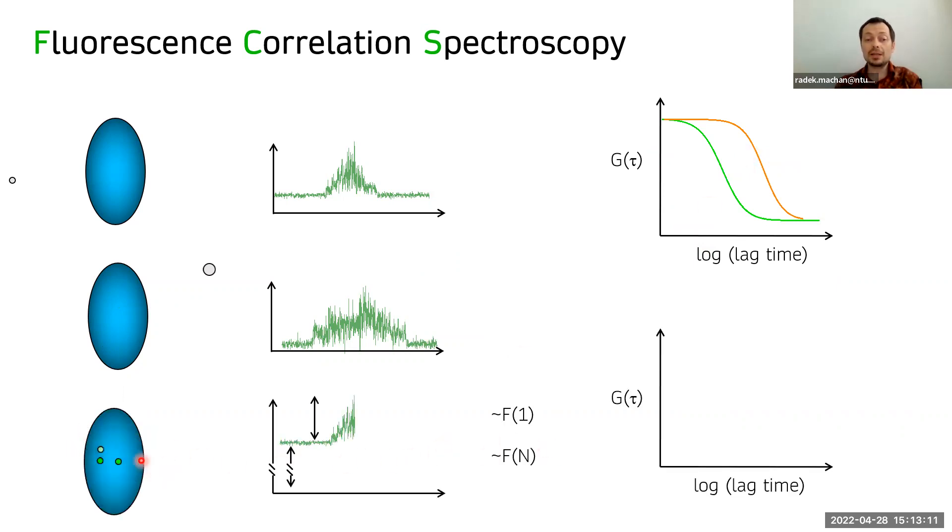If there are more particles in the voxel, then the average signal is proportional to the fluorescence from the average number of particles, while the bursts are proportional to the fluorescence of a single particle. That means that the amplitude of the correlation function is inversely proportional to the average number of fluorescent particles.